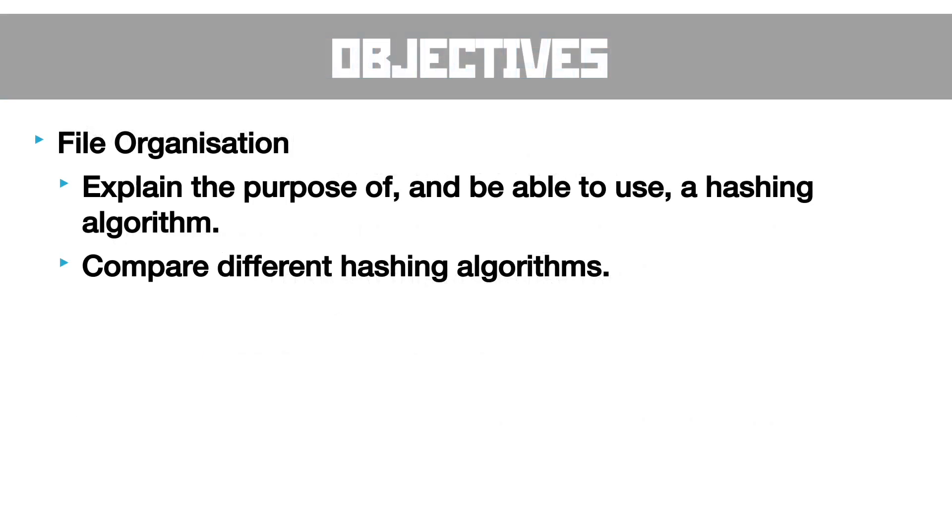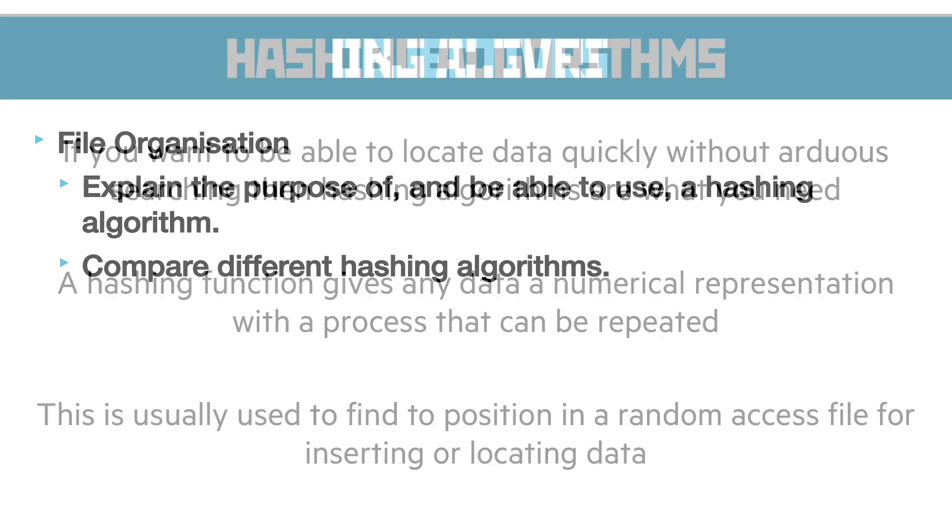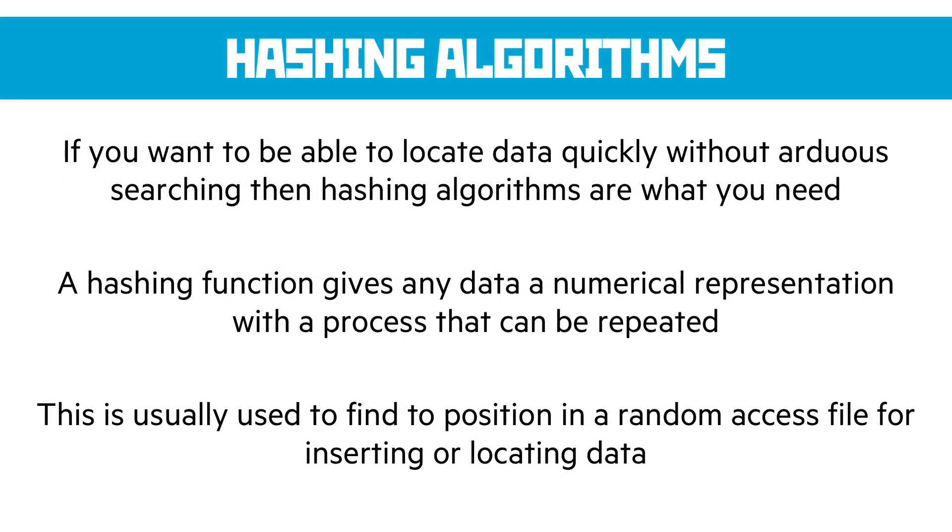The next objective we need to talk about is file organization. So first of all, what is a hashing algorithm? Well, the point of hashing is that if we want to be able to find data without a massive, complex search, a hashing algorithm can speed it up enormously. And what a hashing function is, is it gives any data that you present to it a numerical representation. And it's a process that can be repeated. So when I'm inserting the data, I can find a numerical representation for it and put it in that location. And when I'm looking for it, I can work out the numerical representation and find it just as quickly.